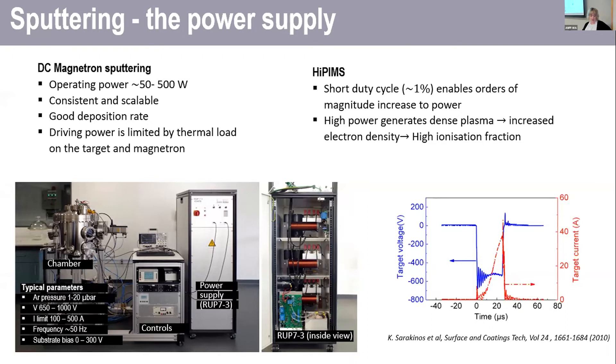So here is the system we have at Curtin. We've got a chamber and the controls, which is essentially just a DC magnetron sputtering system. And this other bit here, the large piece next to it, is the power supply. And it just uses these large capacitor banks to access a really high pulse.